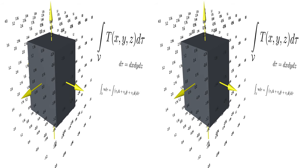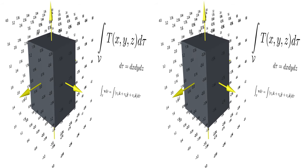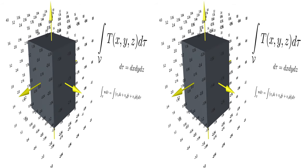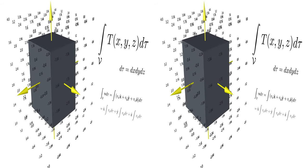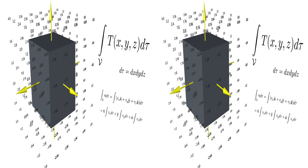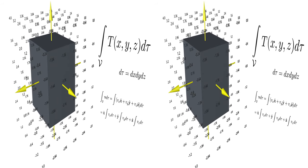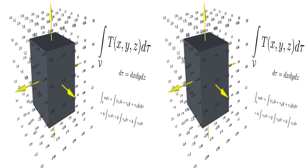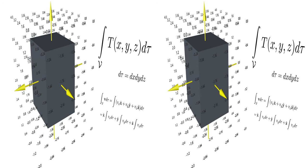It is also possible to do a volume integral of a vector function, and since the volume element is a scalar quantity, the integral produces a vector where each component is the volume integral over the x, y, and z components of the vector field.